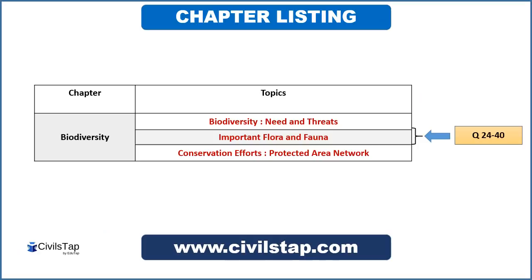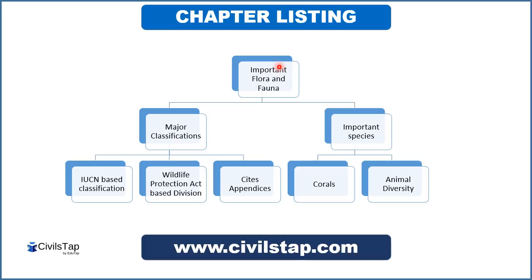We have divided biodiversity under 3 sections: first is biodiversity needs and threats, second is important flora and fauna, and third is conservation efforts and protected area network. We have covered biodiversity needs and threats in our previous video, and now we will start with important flora and fauna, which is divided into two sections: major classifications and important species.